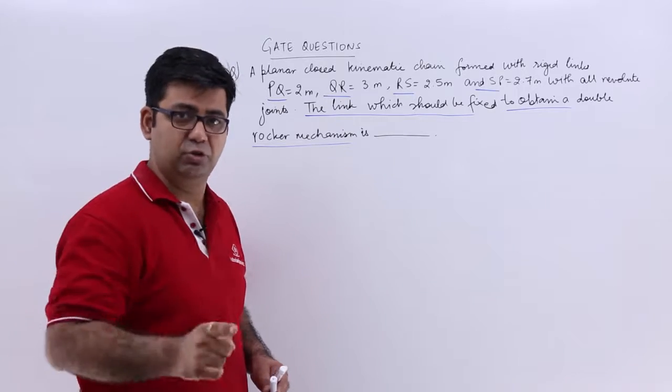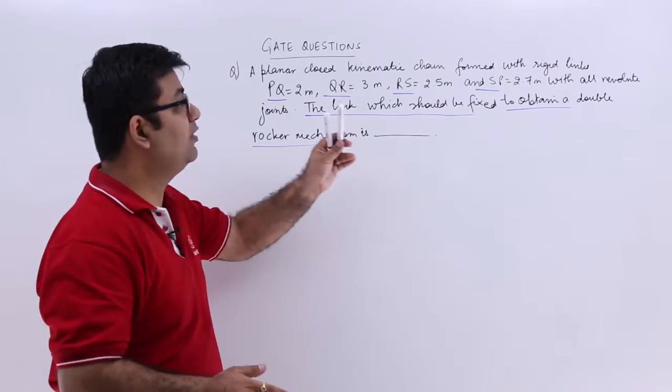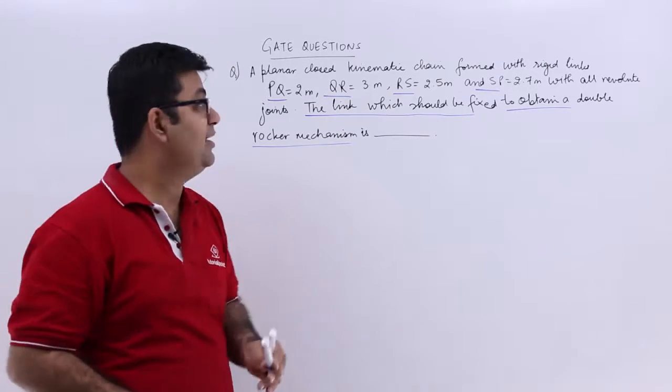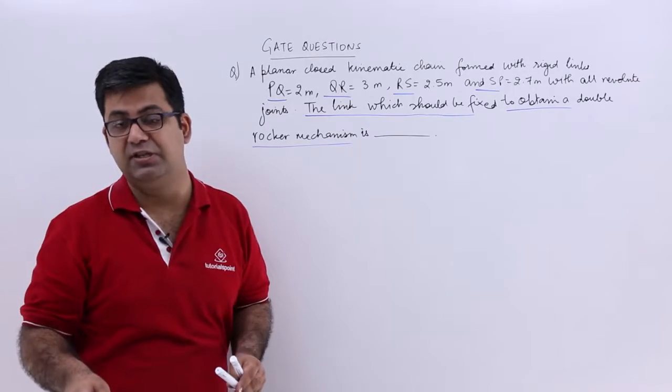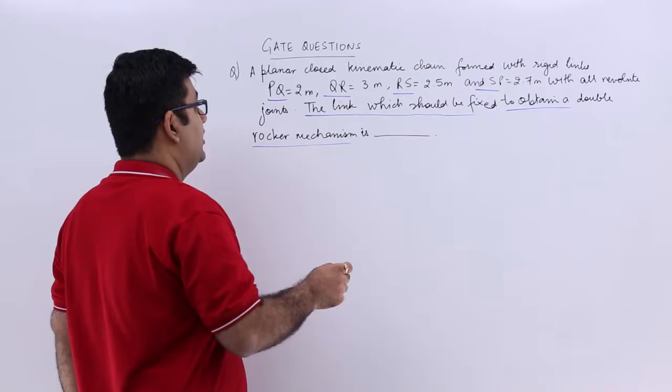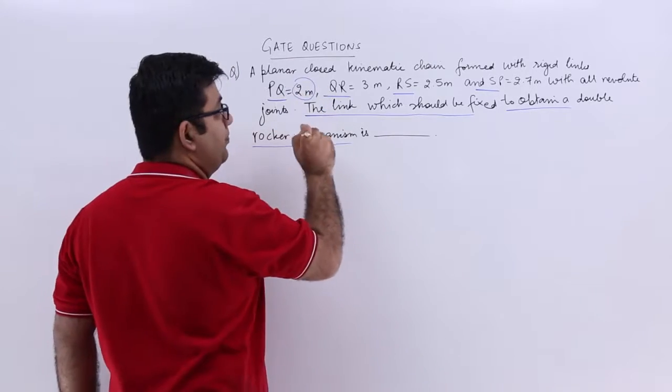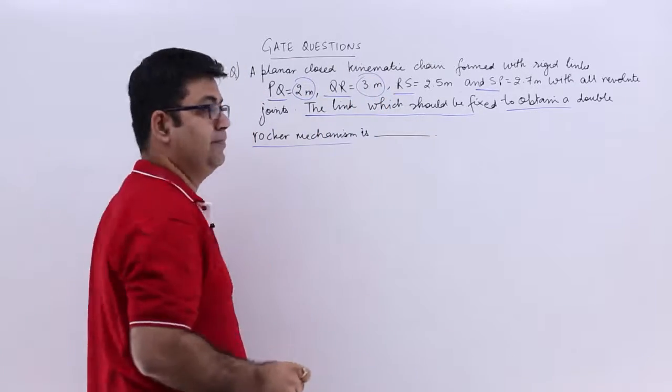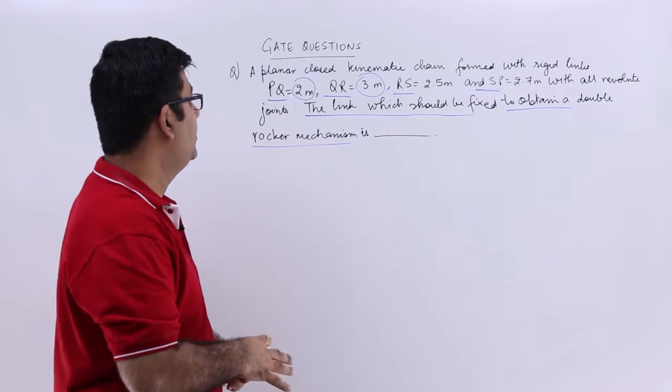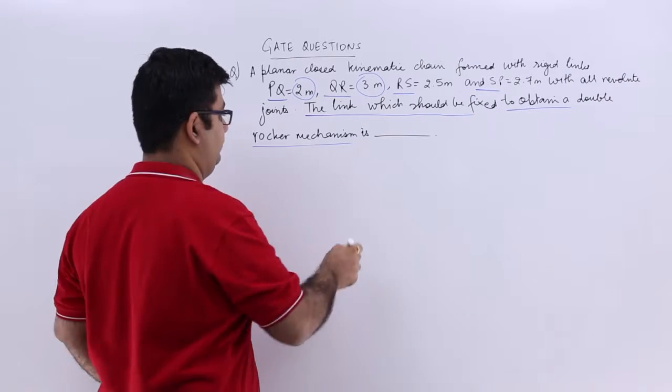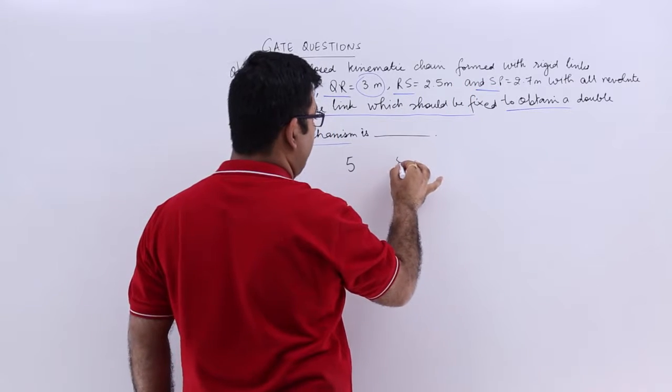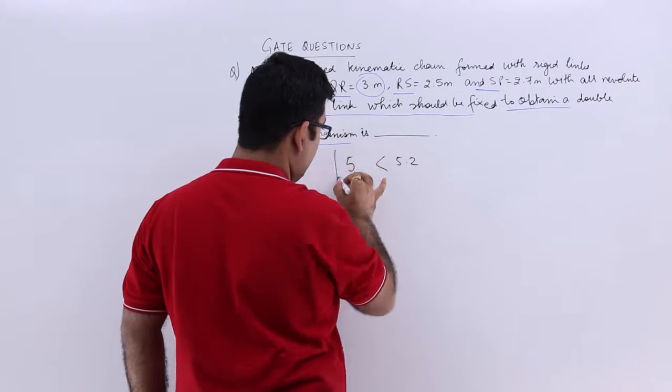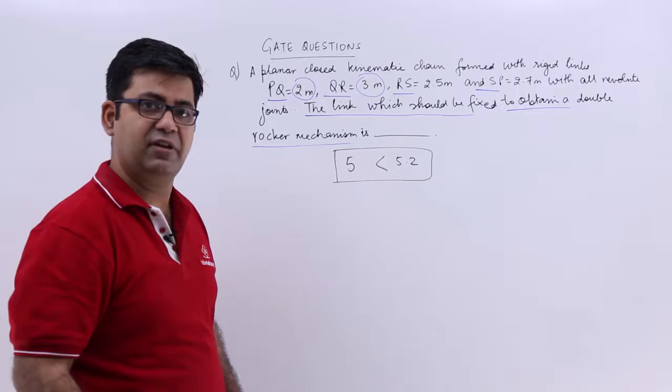You are given the length of the links. Identify the longest and shortest link and check whether Grashoff's condition is satisfied. The shortest is 2 and the longest is 3. So 2 plus 3 is 5, and the length of the other 2 links is 5.2. This is the Grashoff condition, which is satisfied.